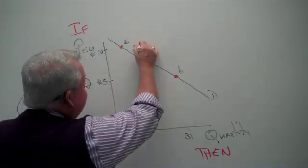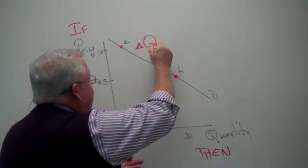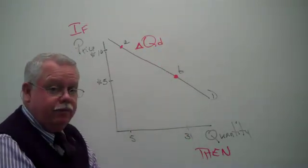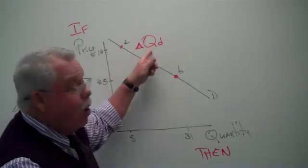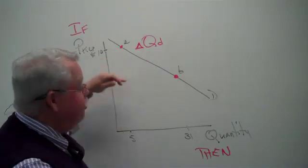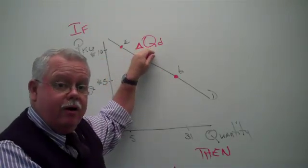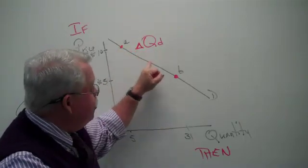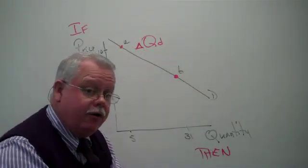Remember, we say that if the price drops, then the number that people buy changes. And we say it this way: this would be a change, delta sign is change, a change in the quantity demanded. That's not the same thing as a change in demand. A change in quantity demanded occurs when the price changes for that product. A change in quantity demanded is reflected as movement along the demand curve.